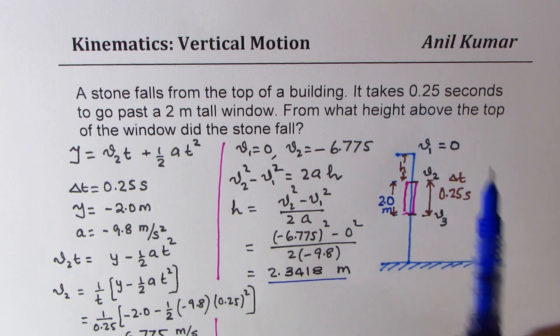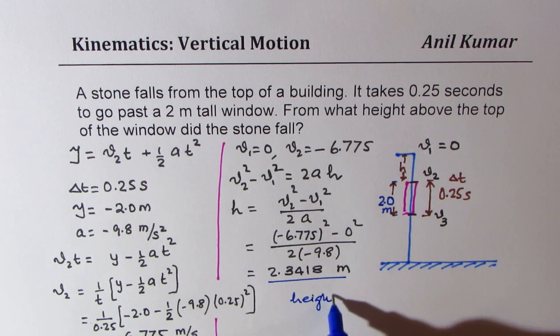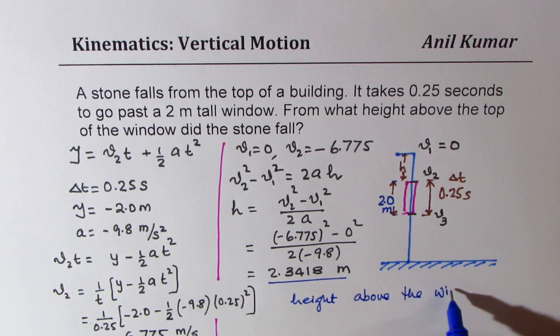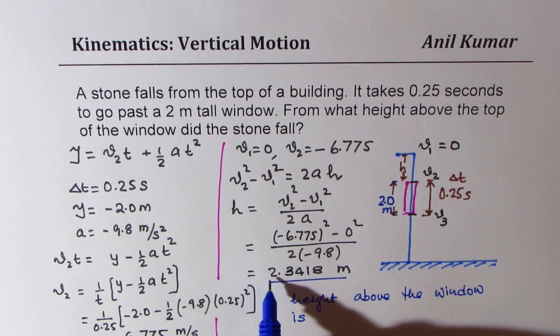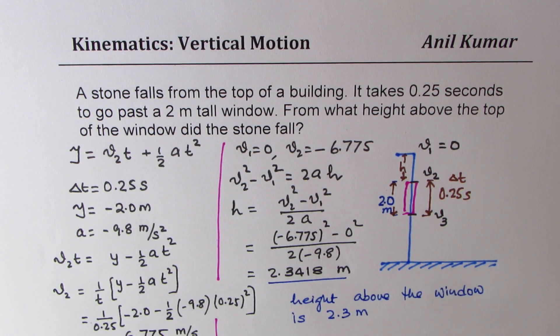We get the height above the window as 2.3418. Since we are looking into two significant places, we can say the height above the window is 2.3 meters. We'll round it to one decimal place.